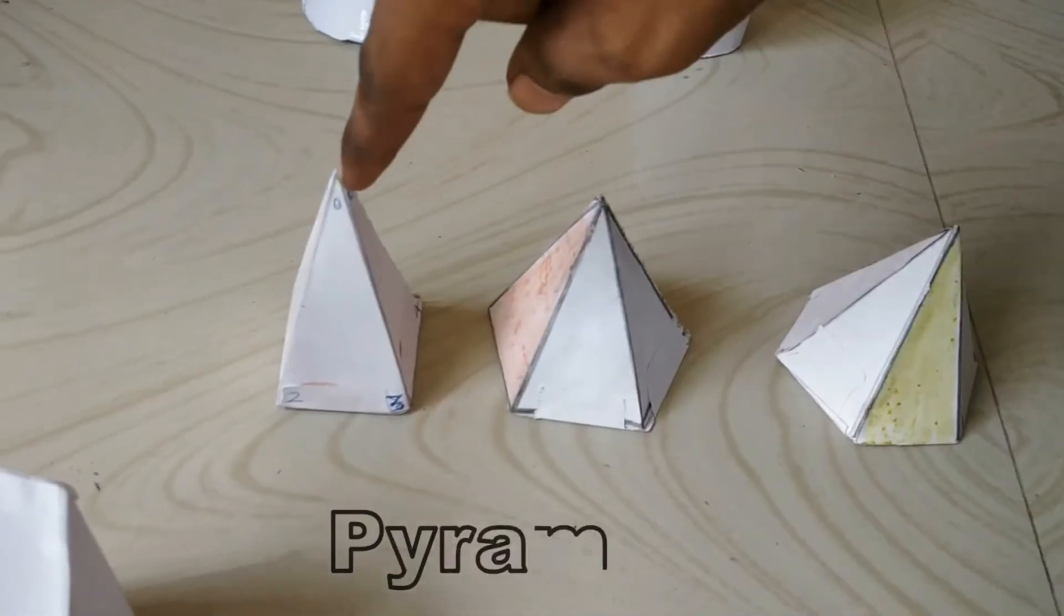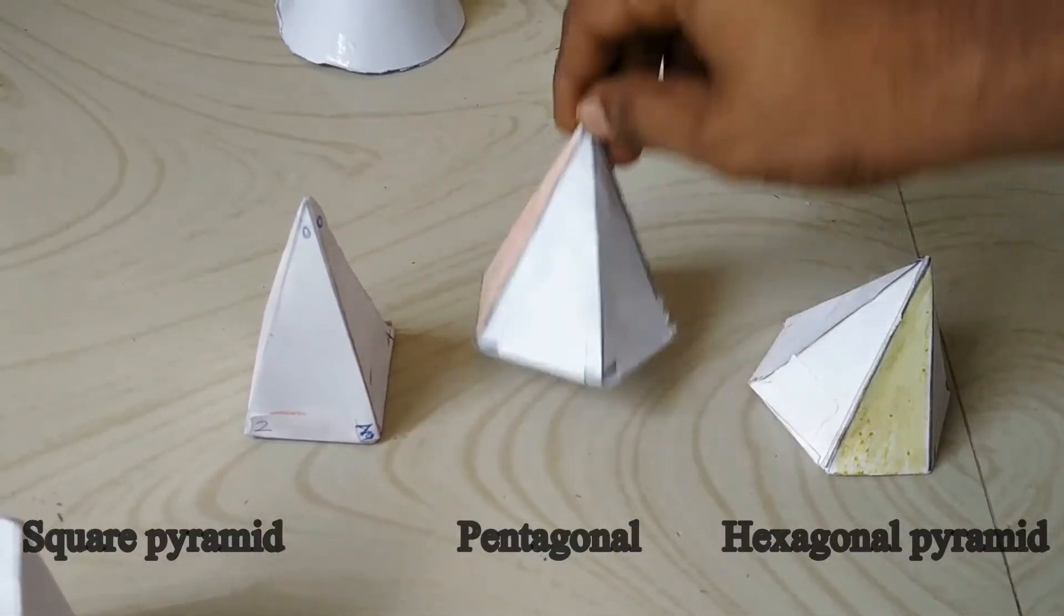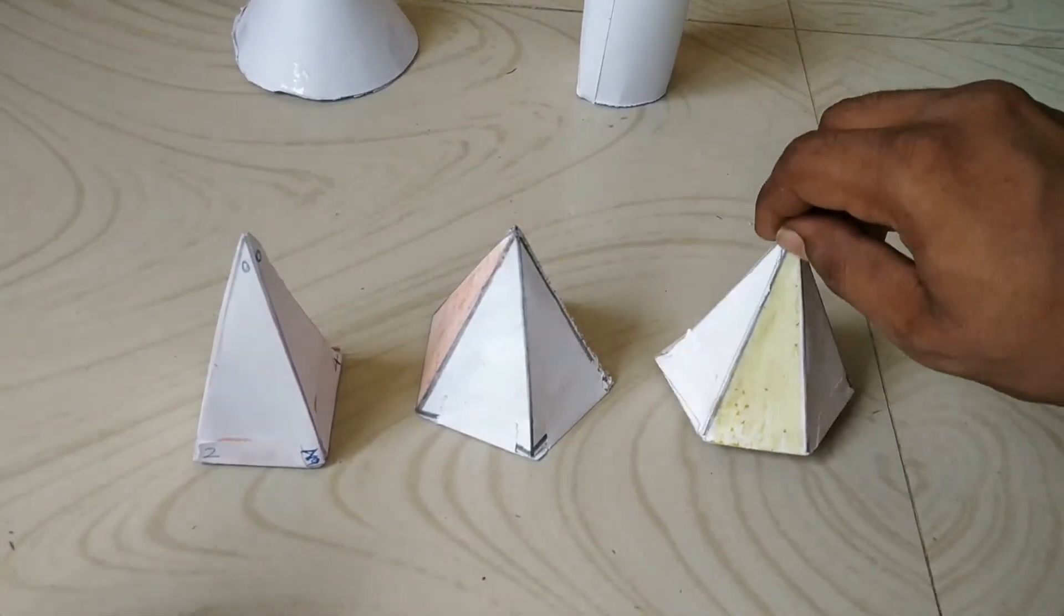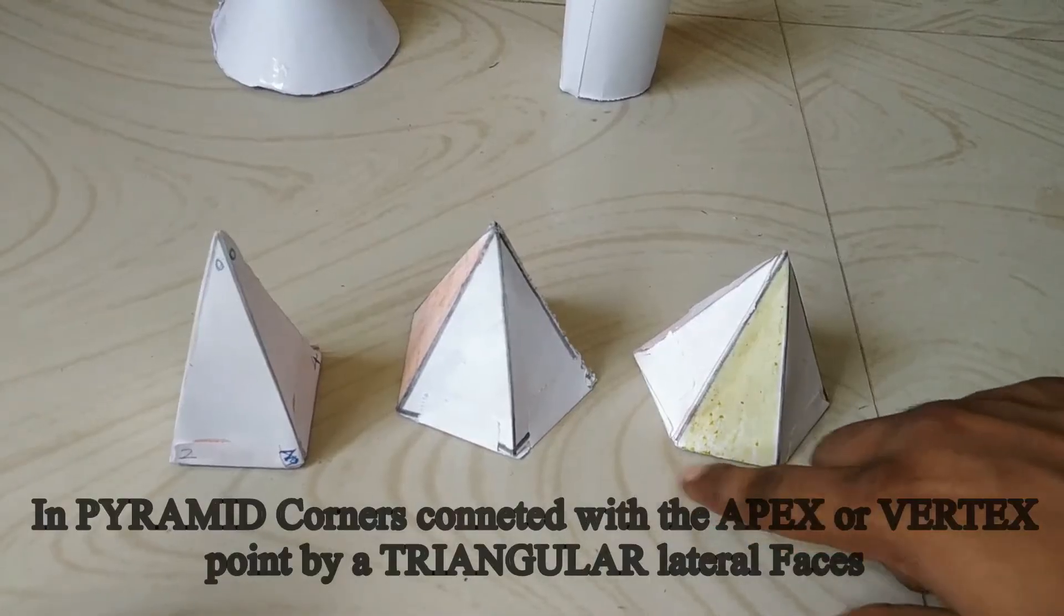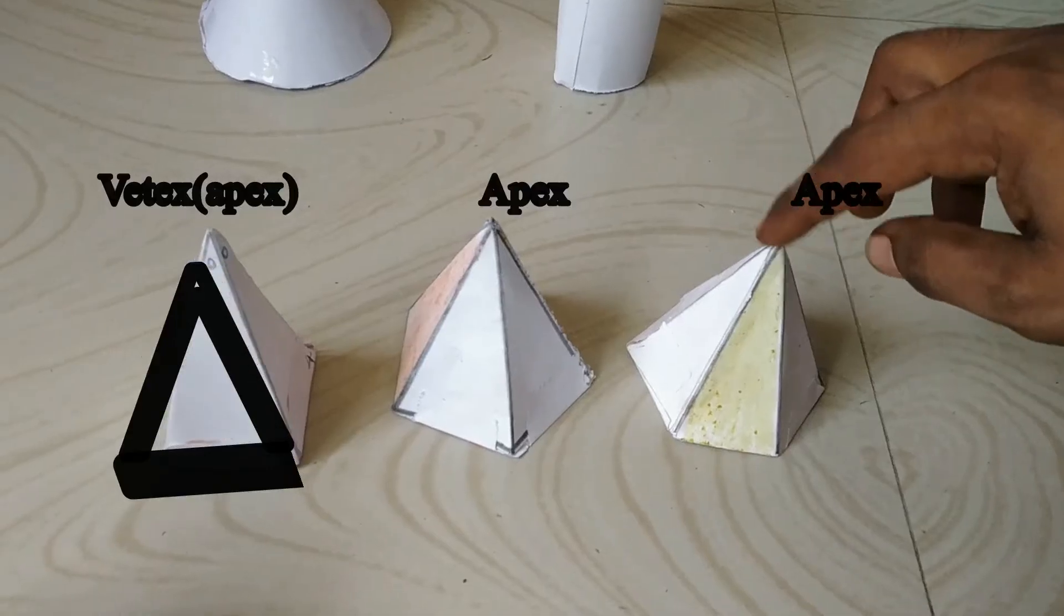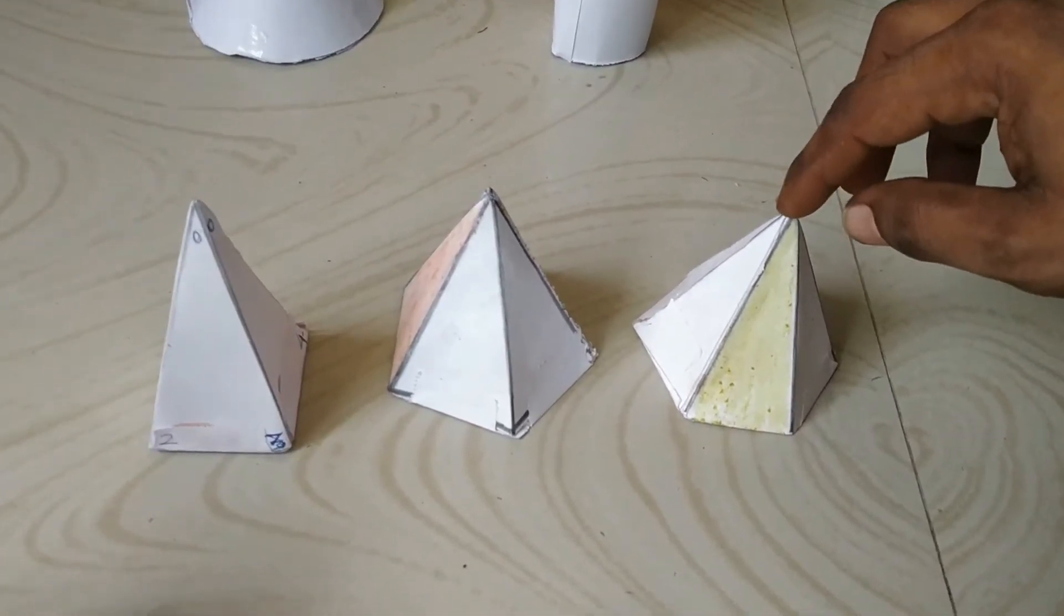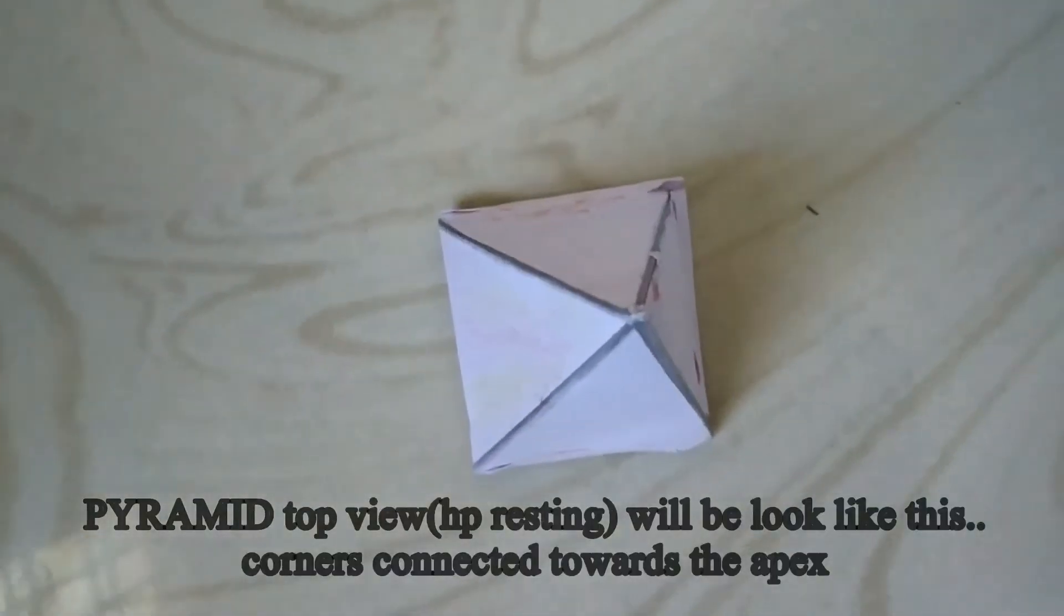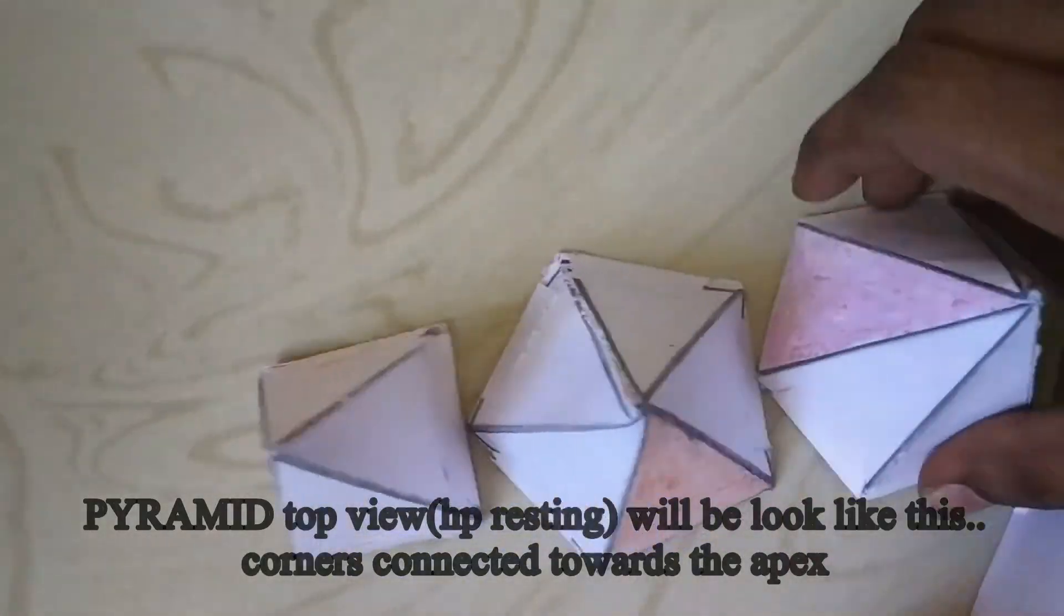This one is a pyramid—square pyramid, pentagonal pyramid, and hexagonal pyramid. For a pyramid, it contains one base and one vertex. The base corners are connected to the vertex by triangular lateral surfaces. For square, four triangular lateral surfaces. For pentagon, five. For hexagonal pyramid, six triangular lateral surfaces.